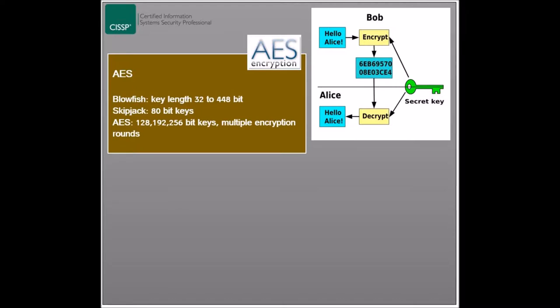Skipjack operates on 64 bits of text too, but uses 80-bit keys. It allows for modes of operation that are supported by DES. This system was not widely adopted due to the ability of US government agencies to reconstruct the keys.